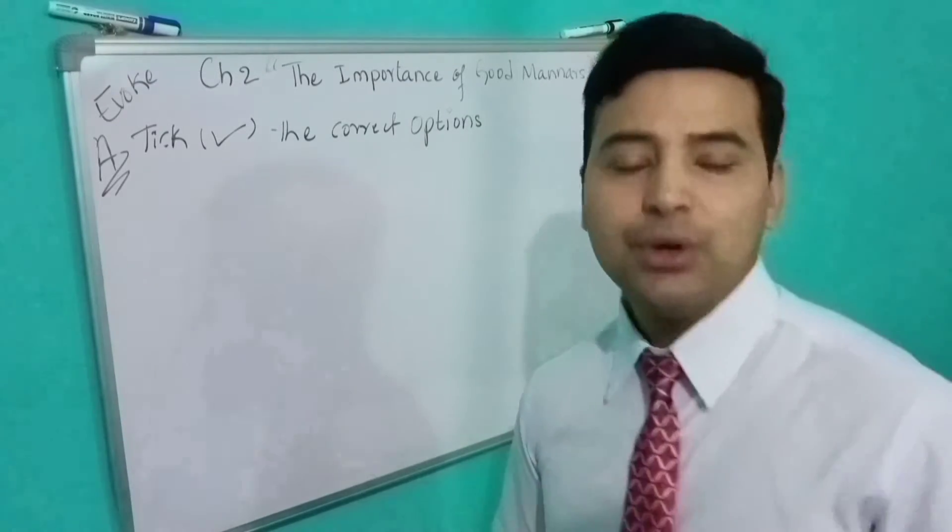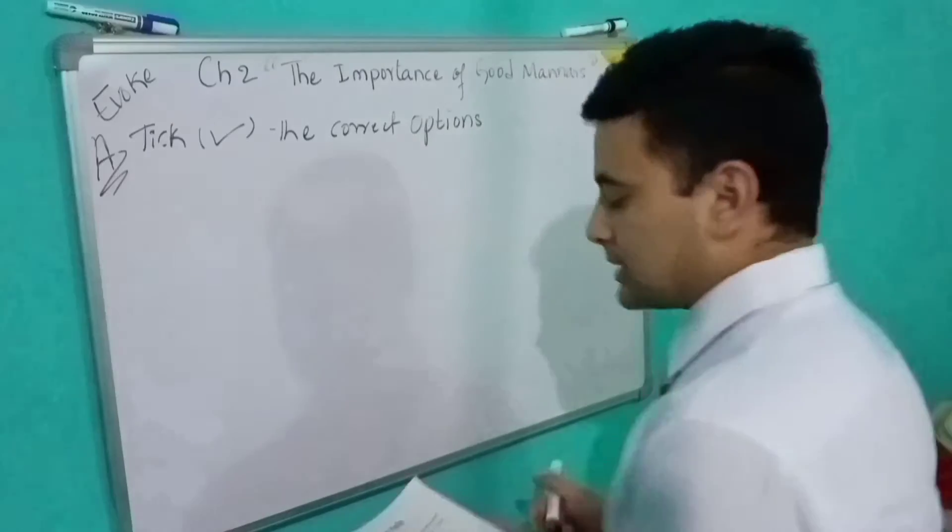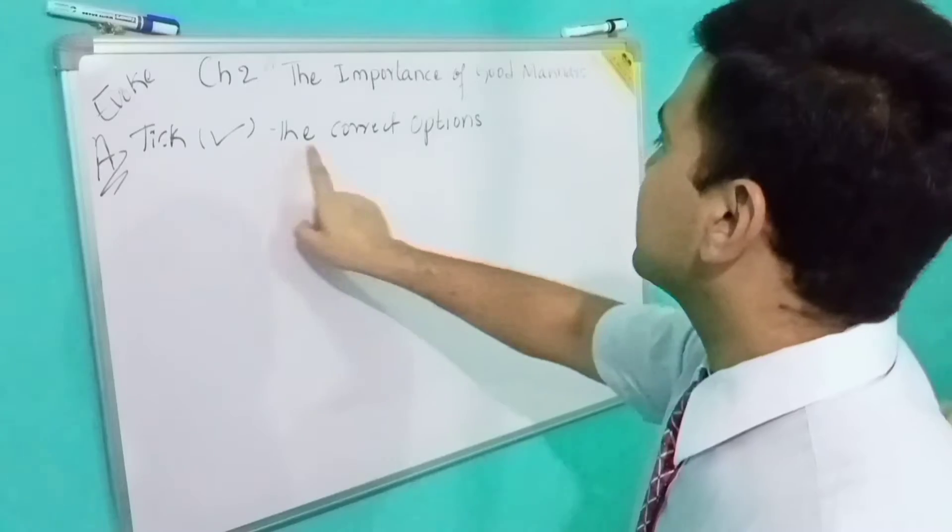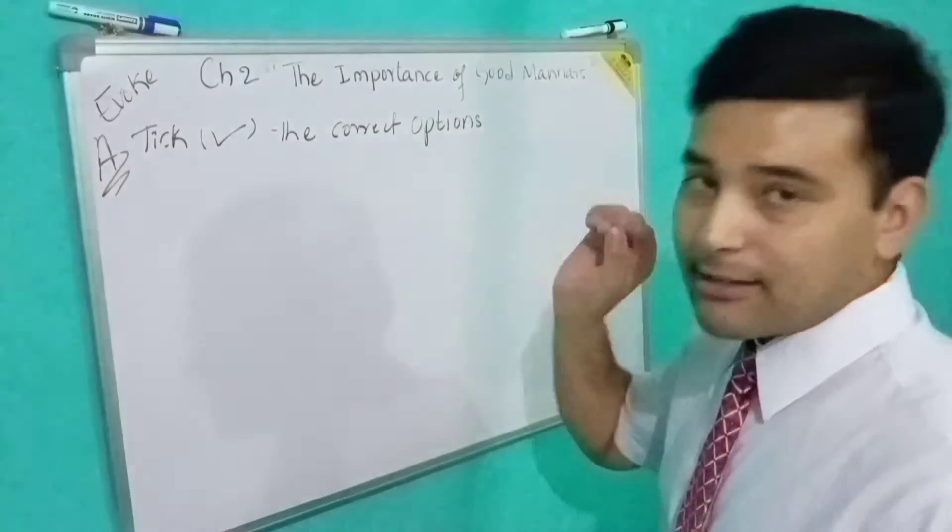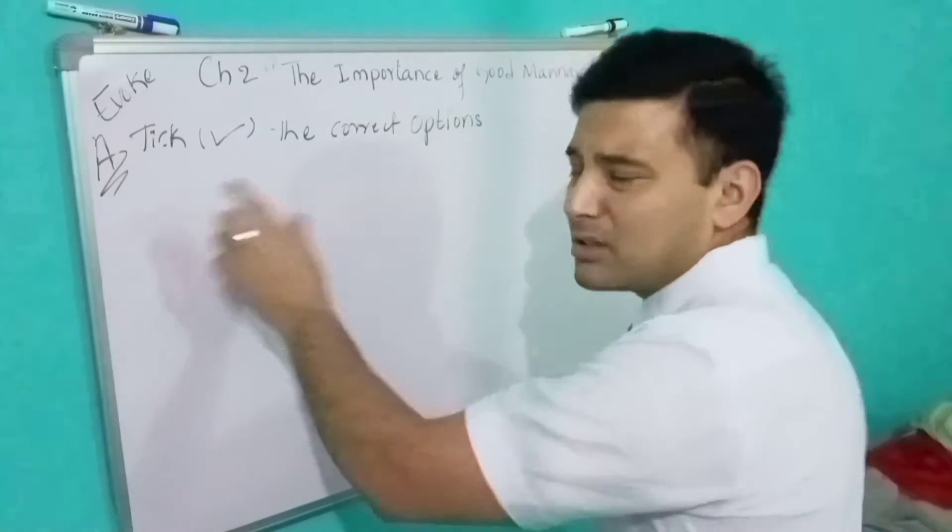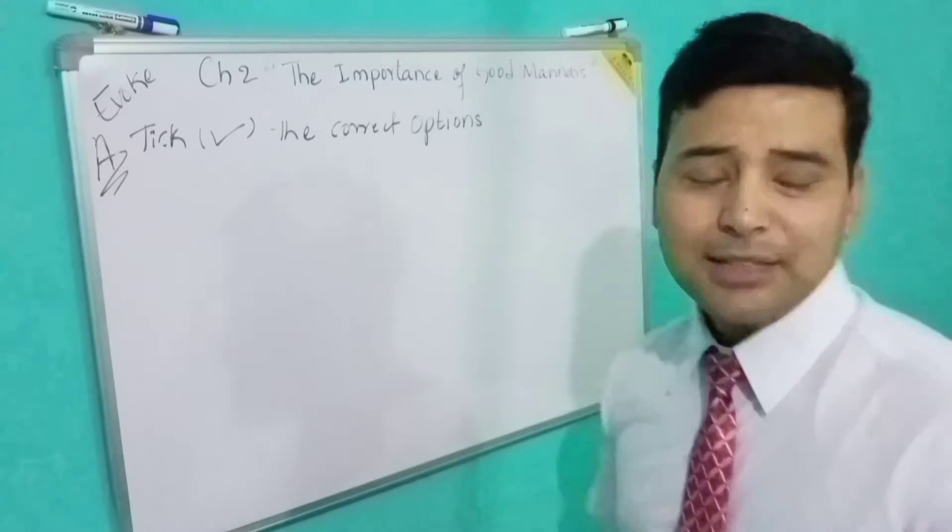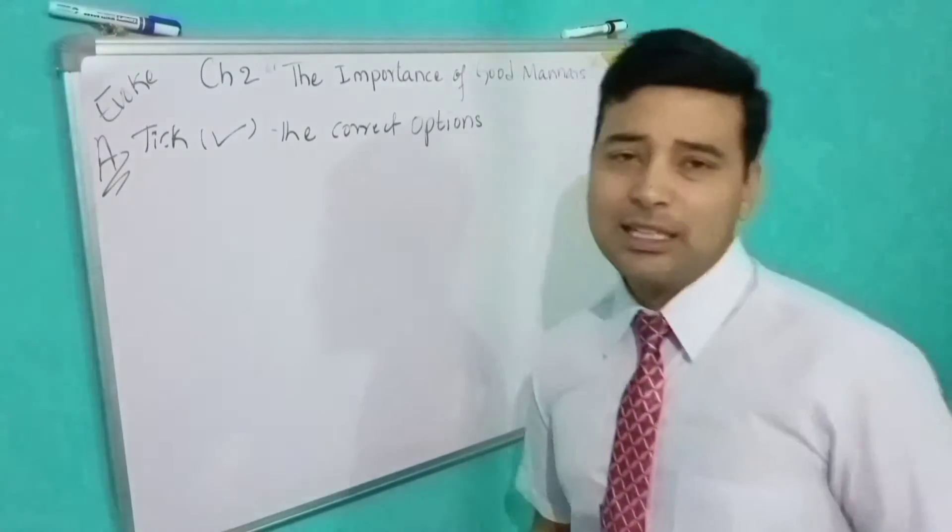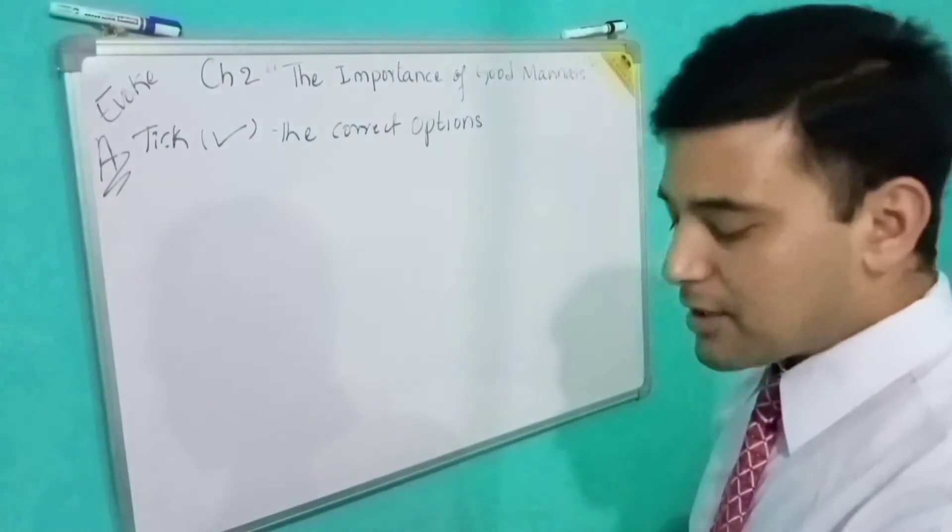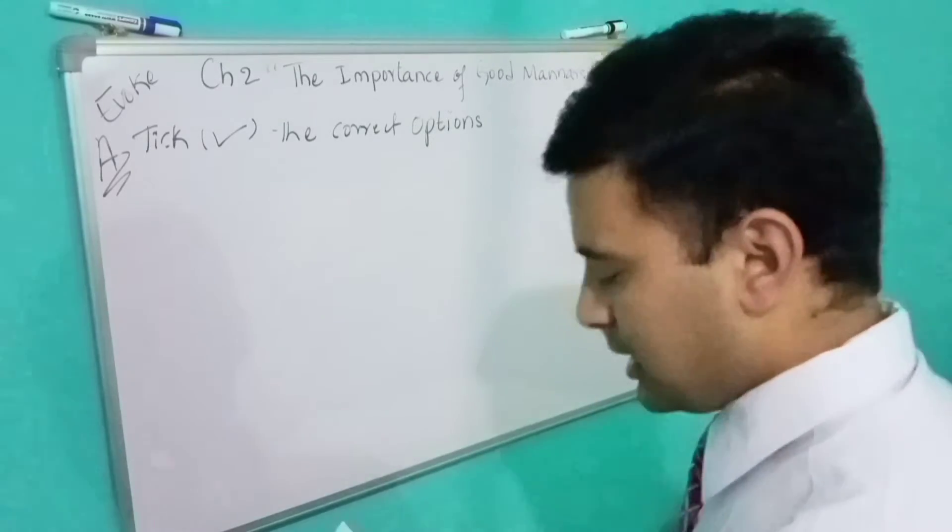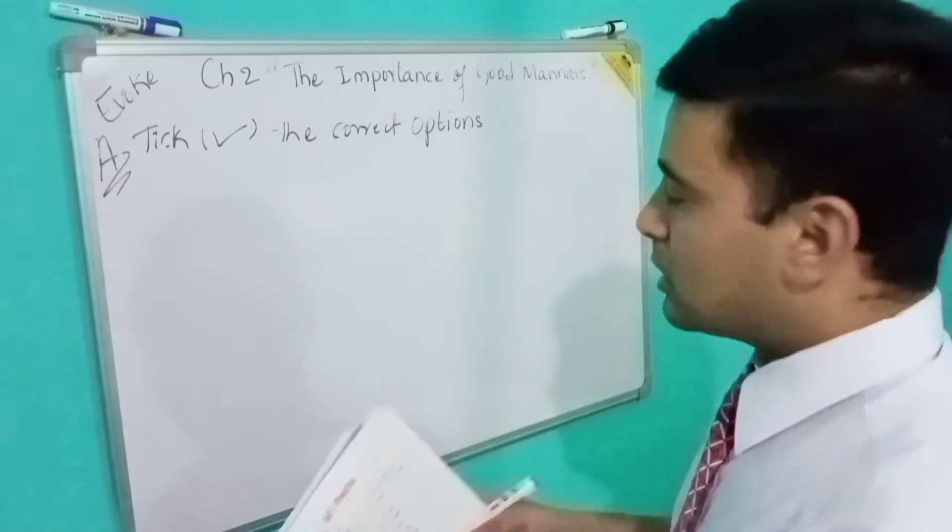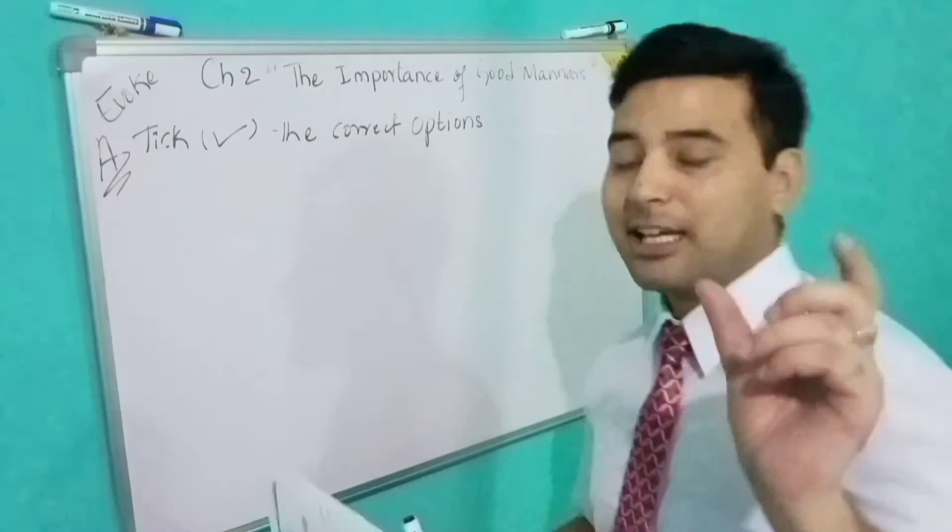Let's move forward towards the exercise. You can see page number 13, number A, tick the correct options. I don't need to write questions on the whiteboard because questions are already in the book. I will just dictate the answers. Look on the whiteboard and listen carefully.